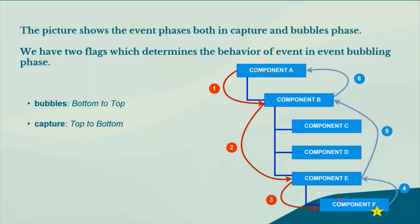So that is how the event propagates when using the bubbling phase. The bubble phase is the default phase used for child-to-parent communication in Lightning. When we are not specifying any phase, bubbling is used by default. Now, in the capture phase, the flow is from top to bottom.